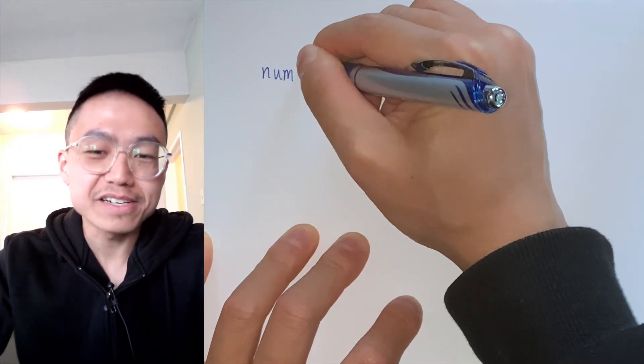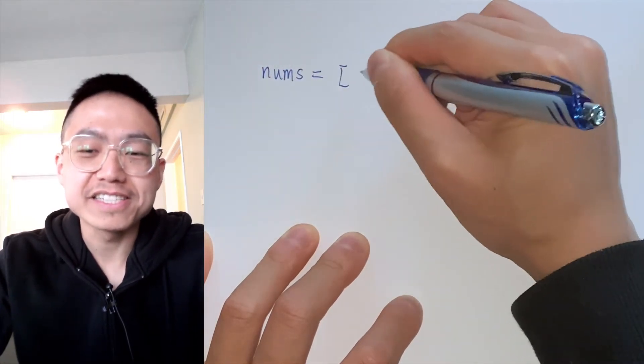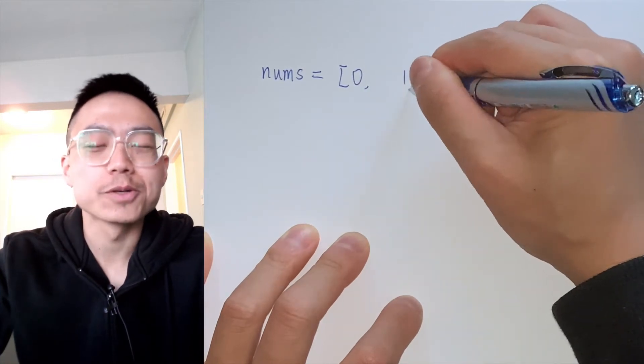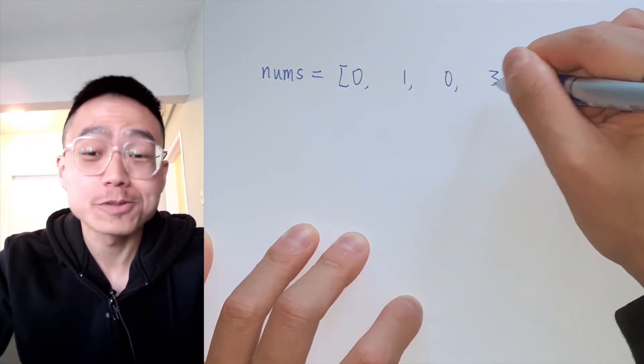Let's see the question, move zeros. We are given an integer array and we need to move all zeros to the end of it.